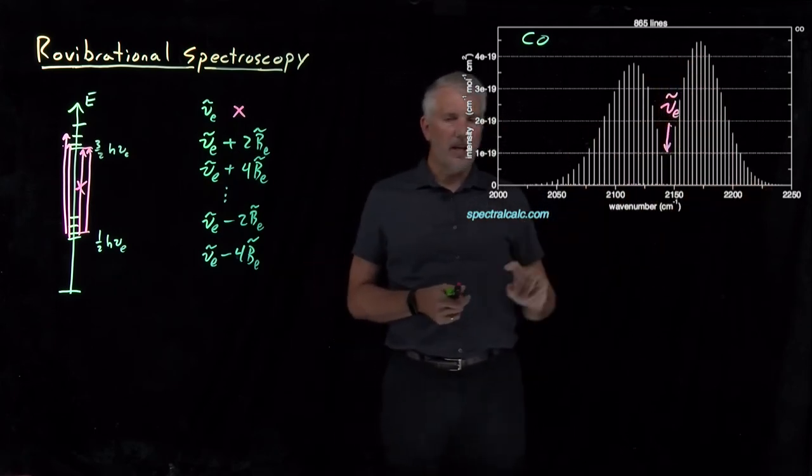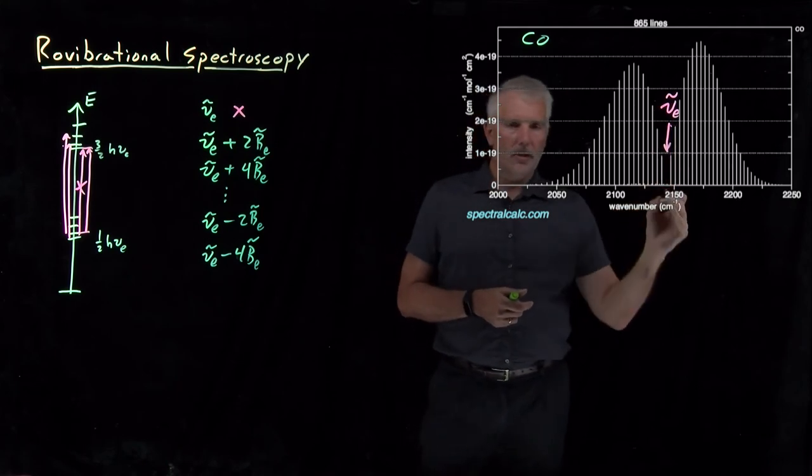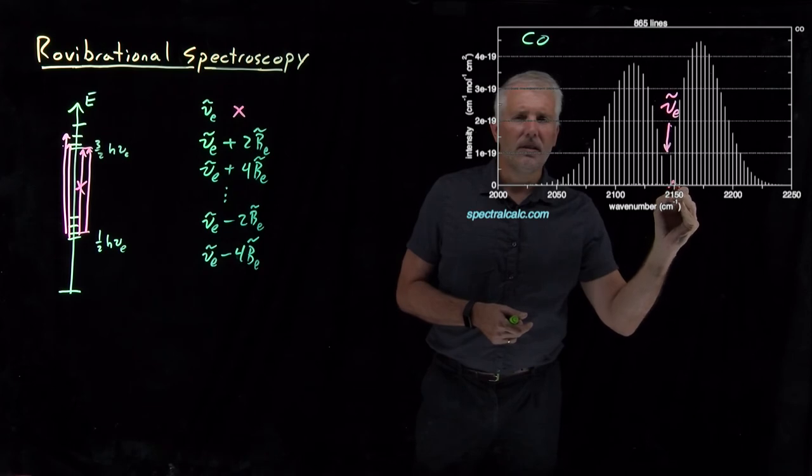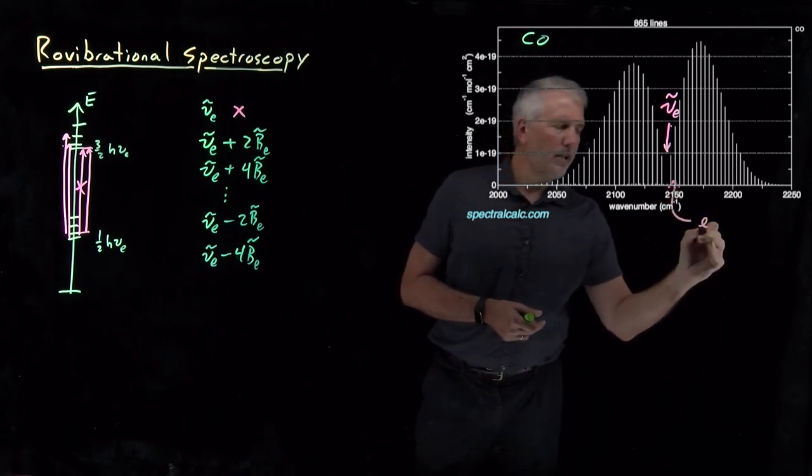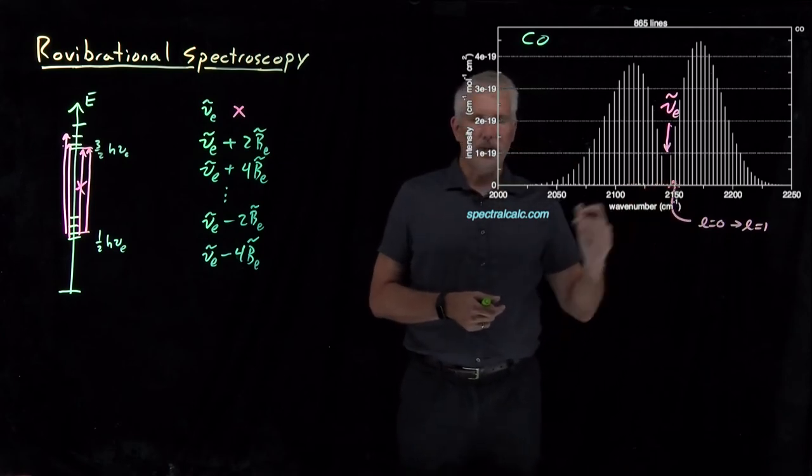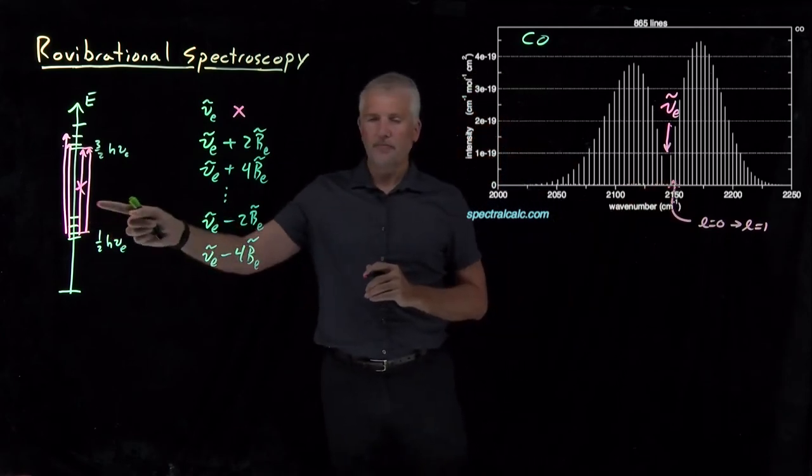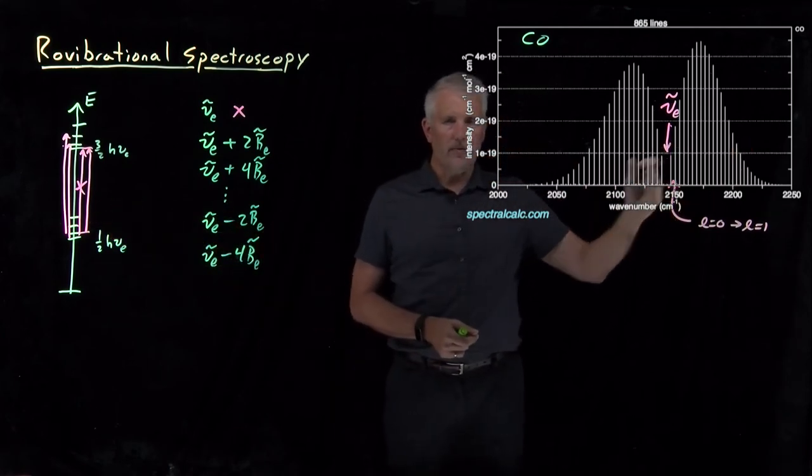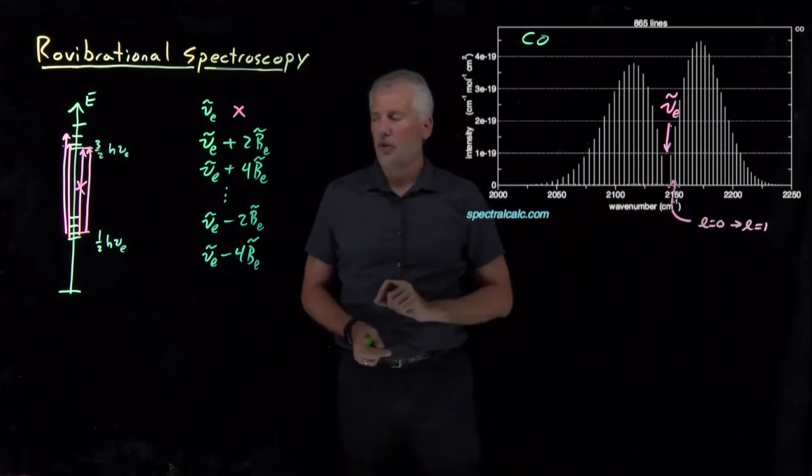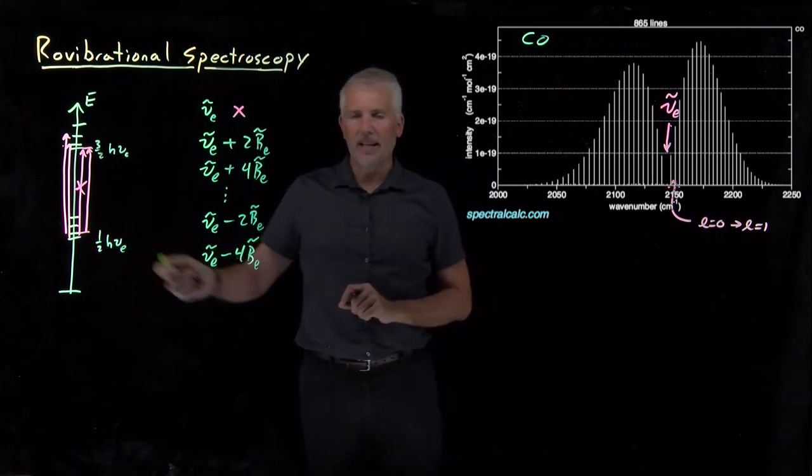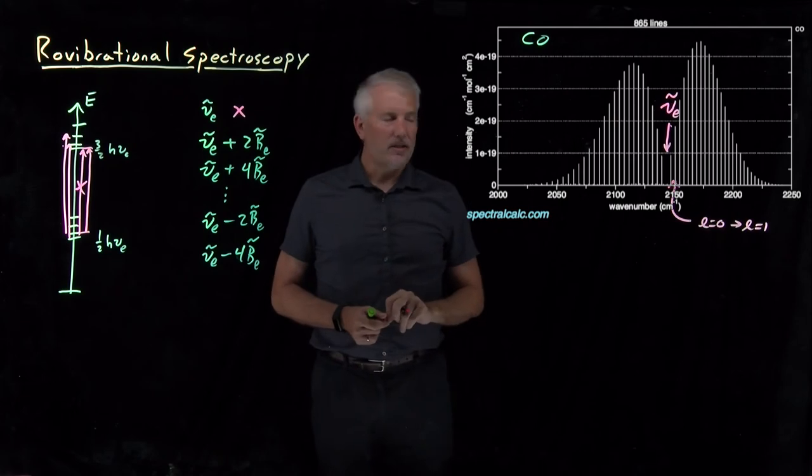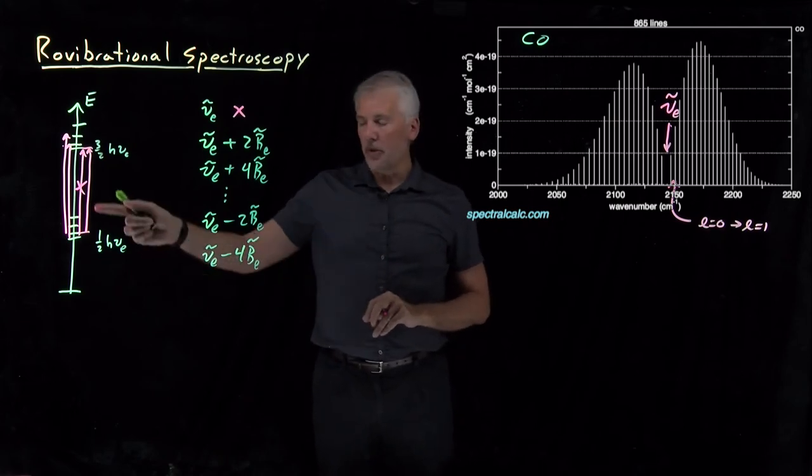So each one of these lines would correspond, for example, the first line above the gap, that would be the L equals zero to L equals one transition. The next one would be L equals one to L equals two. Each one of those lines that we can identify with a particular rotational transition has a height proportional to the number of molecules that are in that initial state. So even the shape of the spectrum is a consequence of the population of those energy levels.